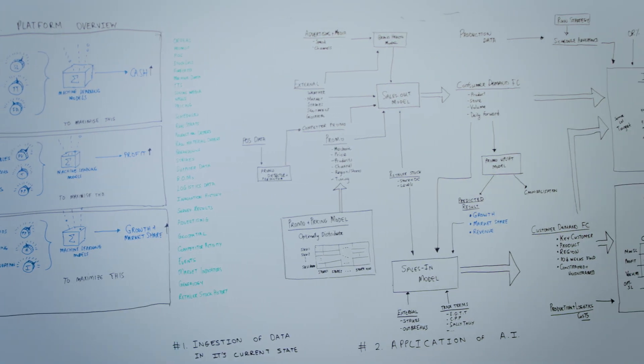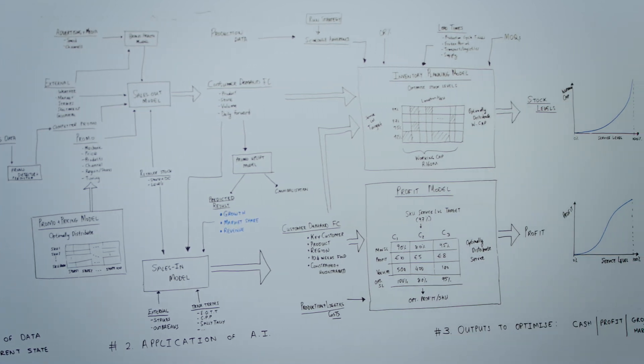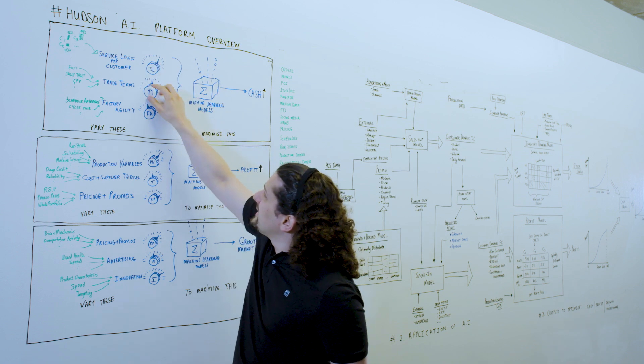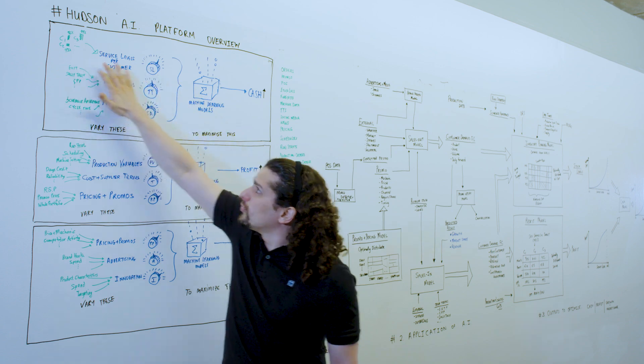The model itself can take into account variables from throughout your supply chain, from production to marketing to sales, and can allow you to see the impact of changing any of these key variables on your bottom line.